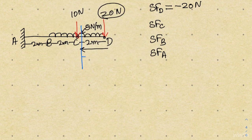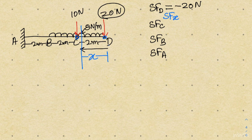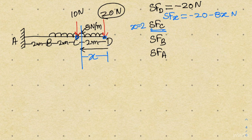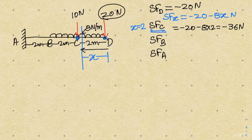Beyond D, moving from D to C, there is a uniformly distributed load. We consider a variable x and write the expression for shear force at any distance x between D and C. The expression is: shear force equals minus 20 minus 8 times x. This expression is valid up to point C. When we reach point C, x equals 2 meters, so the shear force at C is minus 20 minus 8 times 2, which equals minus 36 newton.